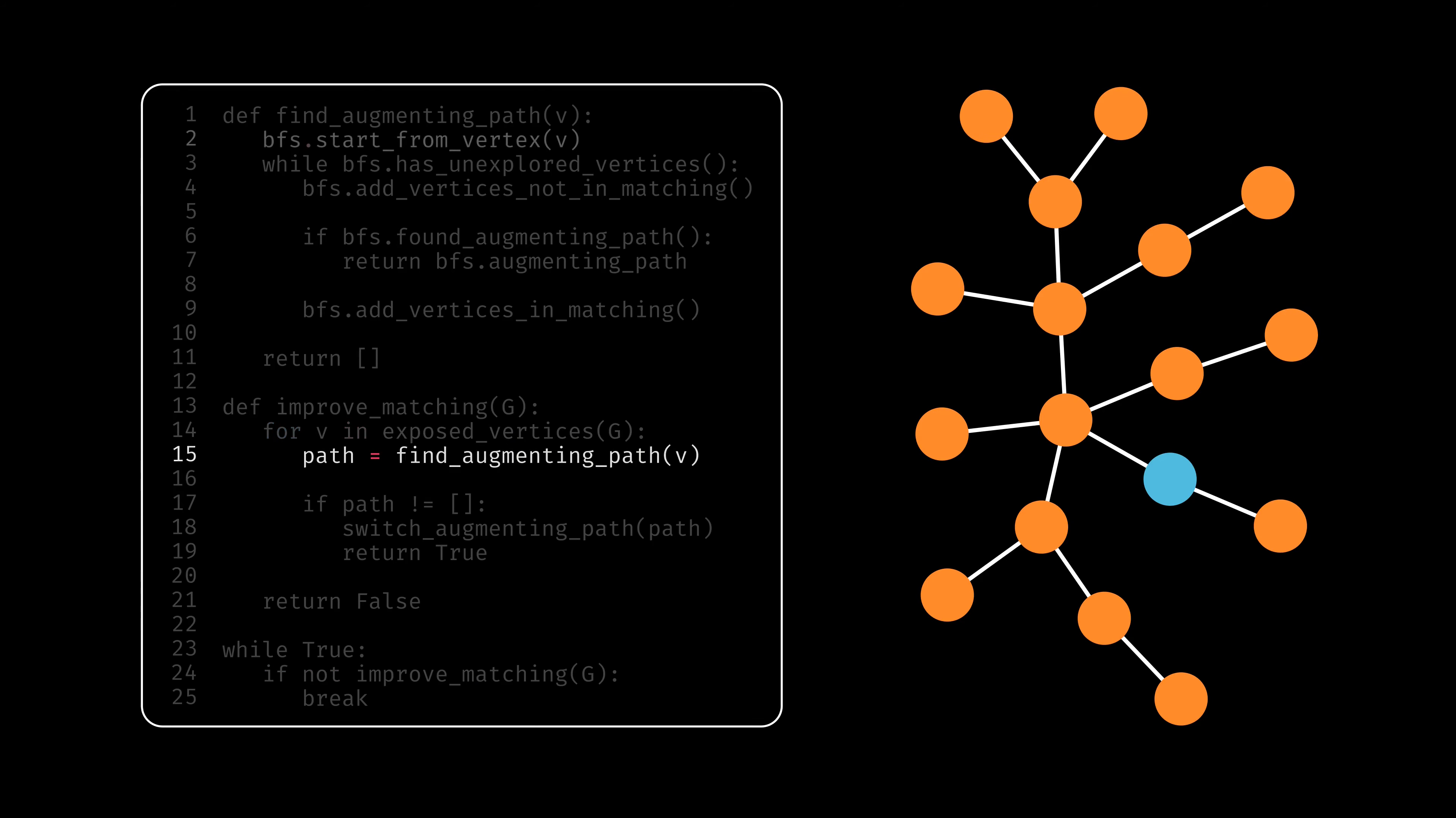Let's fast forward a bit, until some larger augmenting path is found. Here is a longer path that the algorithm finds, that neatly showcases the alternating edges.